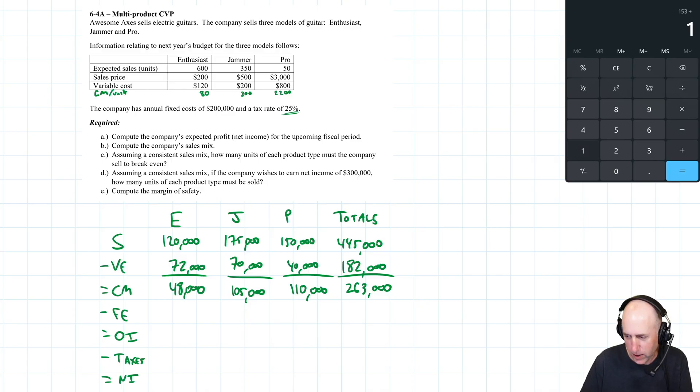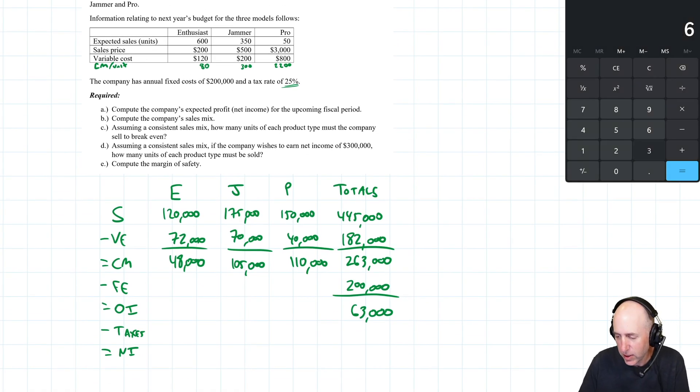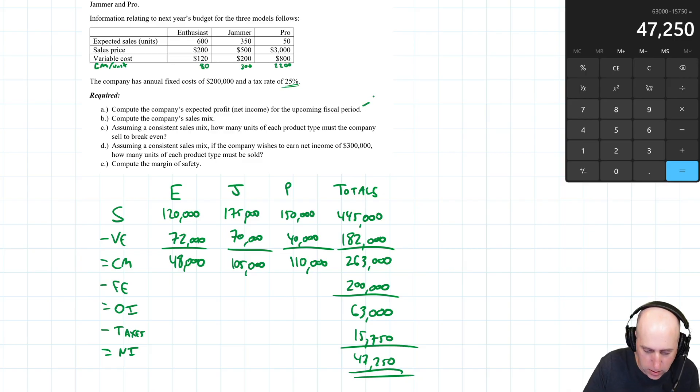Fixed expenses are 200,000. We don't apply them to the various product lines, we just take fixed expenses from the total and end up with operating income of 63,000. We're going to take 25% of that out for taxes - times 0.25 equals 15,750. Our net income is 63,000 minus 15,750, which is 47,250. That is our projected profit and that's our answer to Part A.